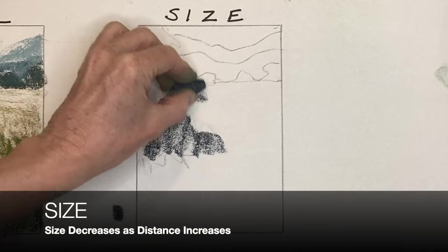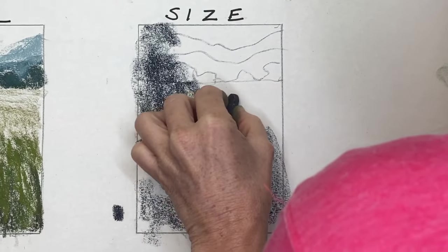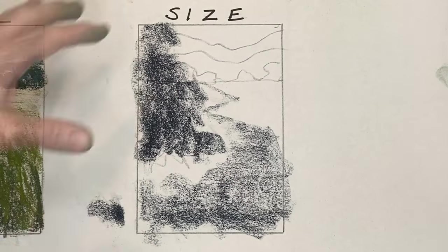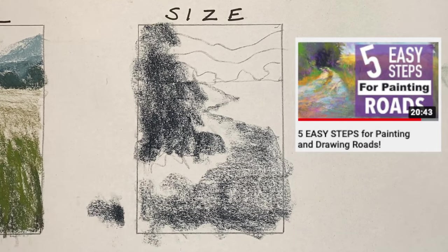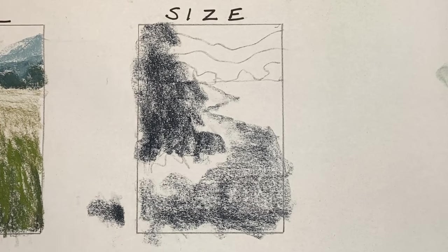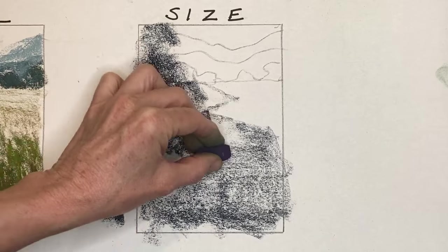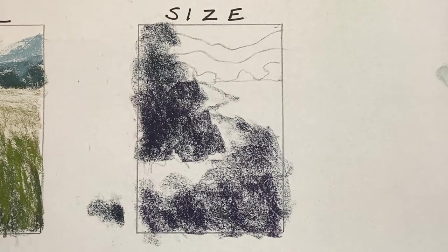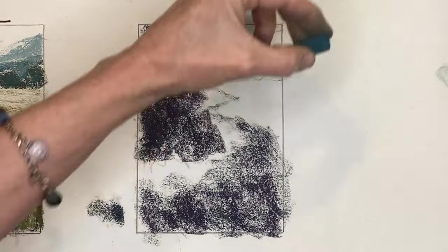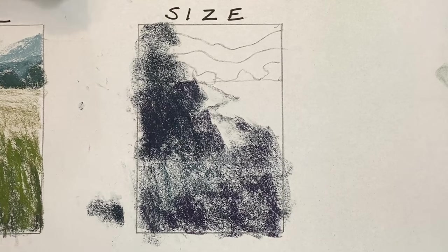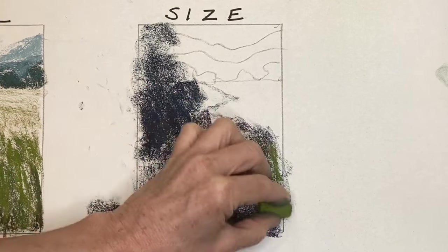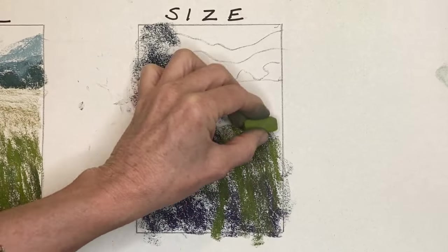Size is one of the easiest of the five steps. I actually recently did a video on how to accurately render roads according to perspective. Keep in mind that size has to do with perspective — roads and other elements in your painting follow the basic rule that size decreases as distance increases. Perspective is another lesson, but check out that video on correctly rendering roads.